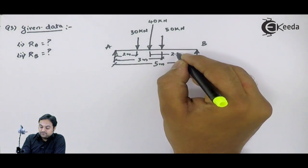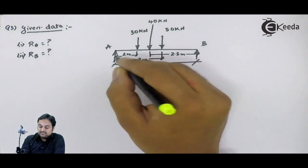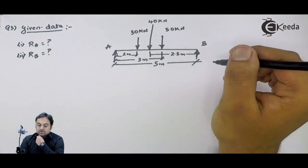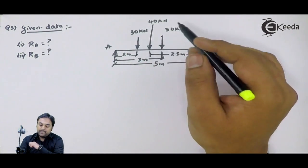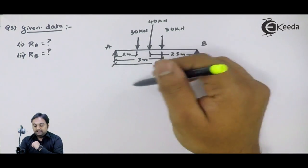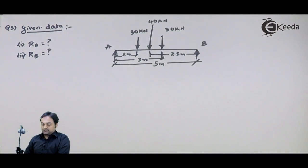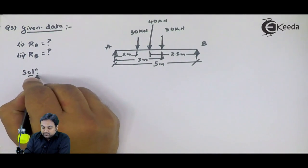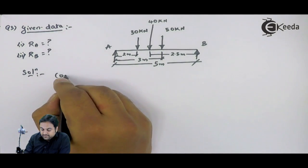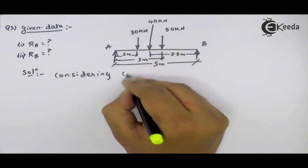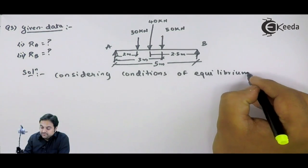I will mark it with respect to B. This is 2.5 meters, exactly at the half. Now, for these conditions which are provided, 30 and 50 are the point loads. 40 kN is the self-weight of the beam, distances are given. We have to calculate the reactions. Let us try to solve this problem. I will write the solution. We would be starting this problem by considering conditions of equilibrium.